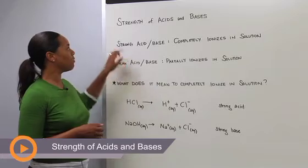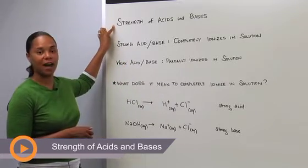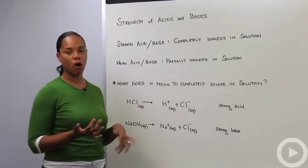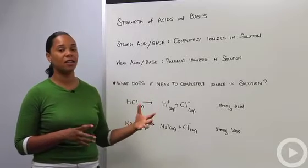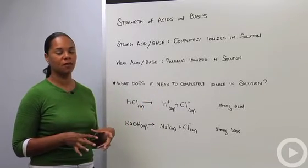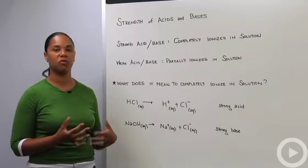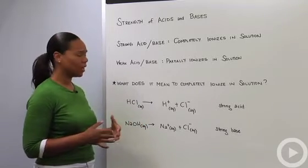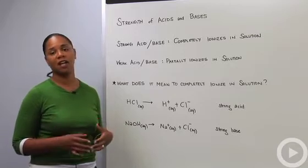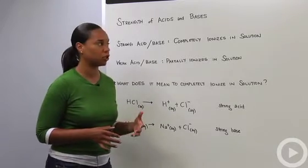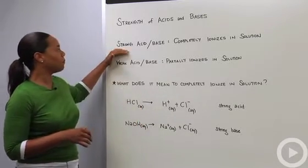We're here talking about the strength of acids and bases. You'll recall that the definition of an acid, if we're talking about the Arrhenius definition, is that it donates protons to solution (H+). And if we're talking about a base, it produces hydroxide ions (OH-) in solution.